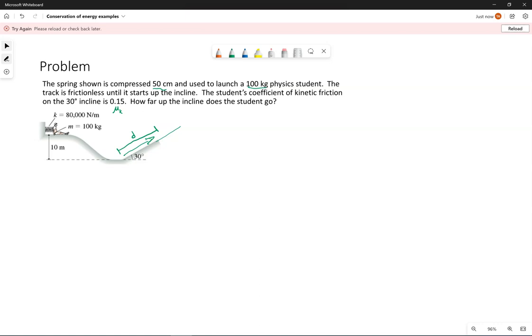This is somewhat similar to the previous example problem with the runaway ramp to help trucks stop if their brakes fail. This student's going to have some sort of speed at the bottom of this incline, and then the friction and acceleration of gravity are going to slow the student down.